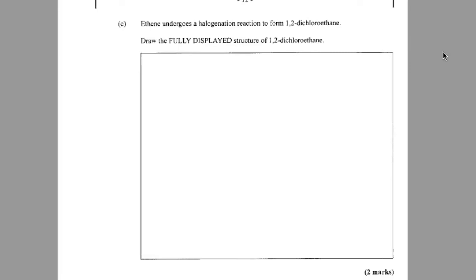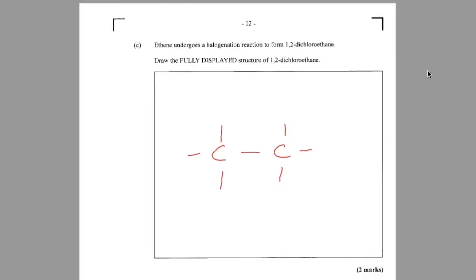Part C. Ethene undergoes a halogenation reaction to form 1,2-dichloroethane. Draw the fully displayed structure of 1,2-dichloroethane. So this is ethane with a chlorine on each carbon. I'll just put a chlorine on opposite sides. It doesn't matter where as long as there's a chlorine on each carbon.